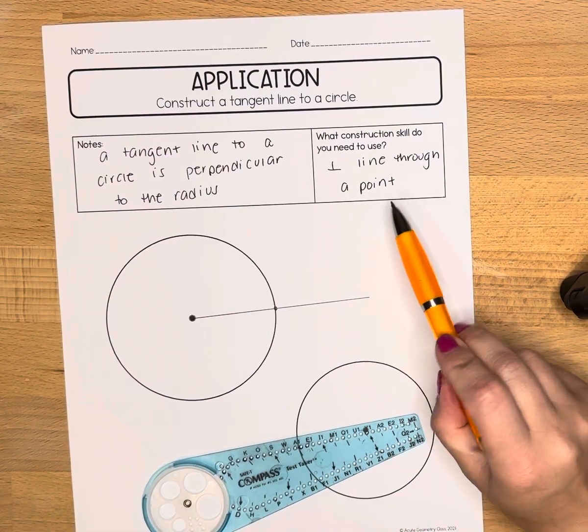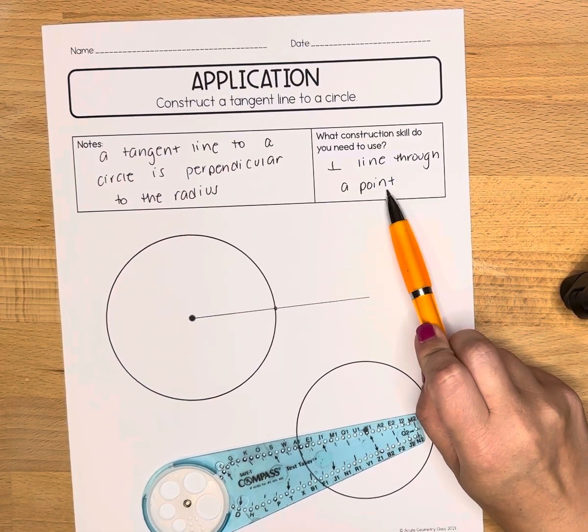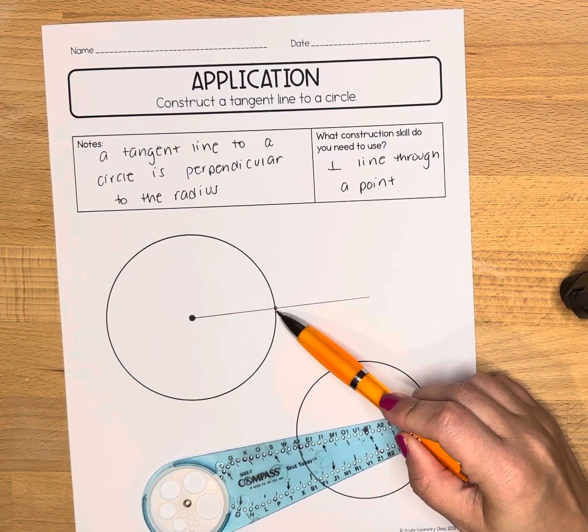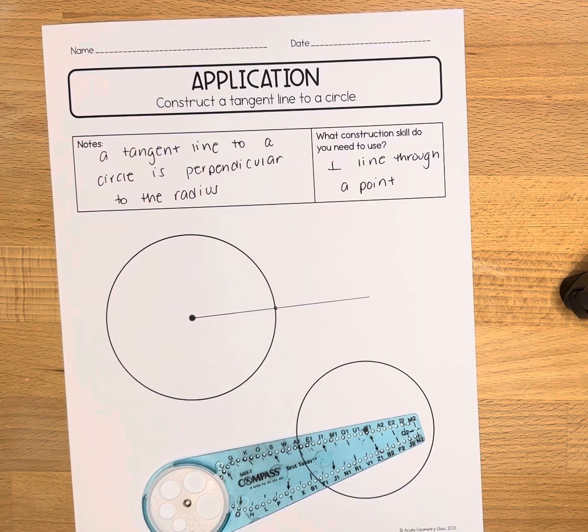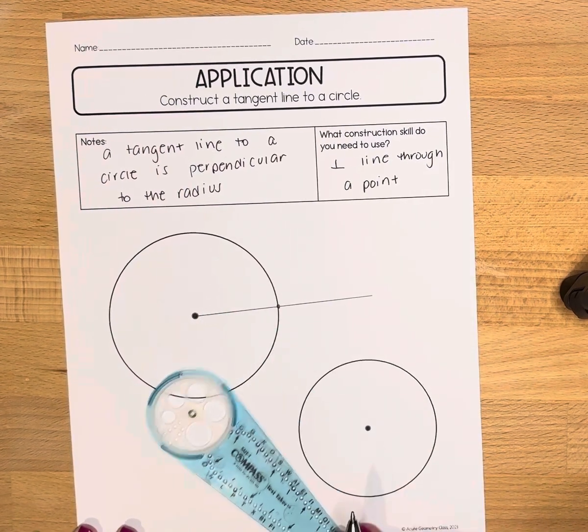The reason is because we are going to be using the perpendicular line through a point. We want to use this point and I just want to make this line or line segment longer so that this next step becomes simpler.